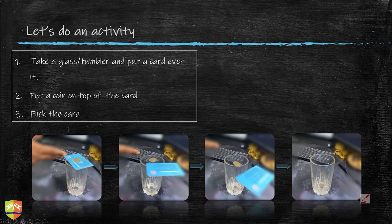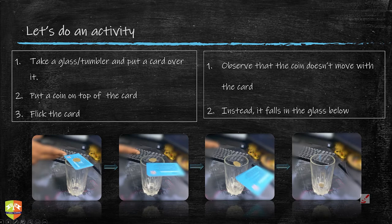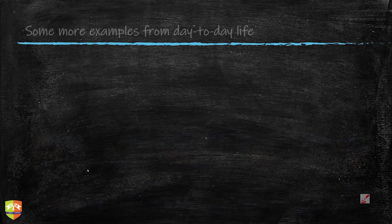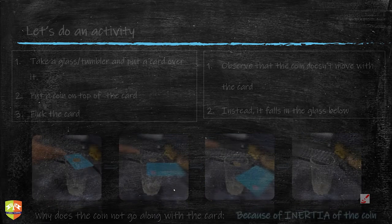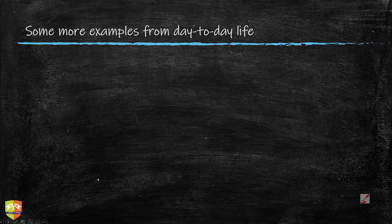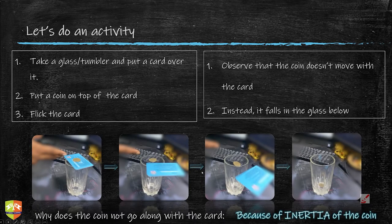You can repeat this experiment very easily — you might have done it already. Grab a glass tumbler from your kitchen, take a stiff card — I've used a gaming coupon card here, and you can use an old credit card of your parents, but do take permission from them. Put a coin over the card, then flick the card with reasonable force so that the coin falls down. You will observe that the coin doesn't move with the card; instead it falls down into the glass.